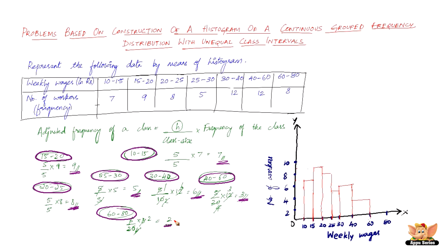And the final one, 60 to 80, it's just 2. So here we have the histogram.